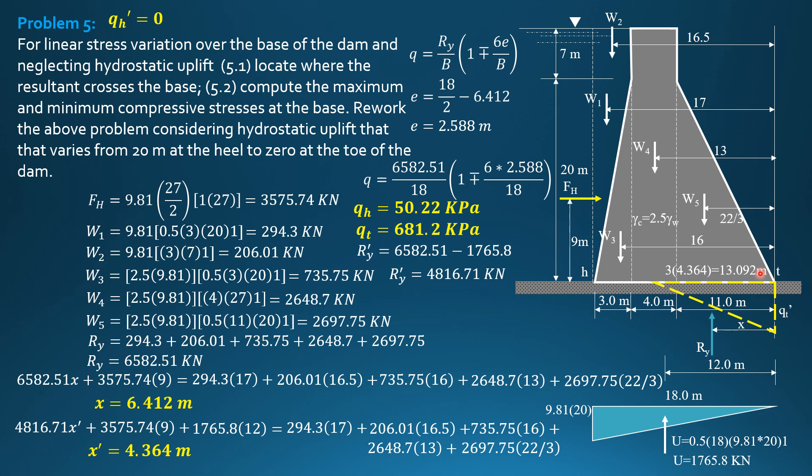We then equate the volume of this pressure diagram to R-Y prime. So 4816.7 equals 0.5 of 13.092 times Q-T prime times 1 perpendicular to the board. So Q-T prime is equal to 735.8 kilopascals. So that's it for this problem.